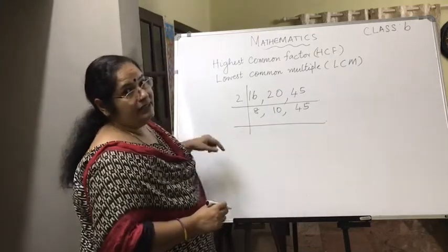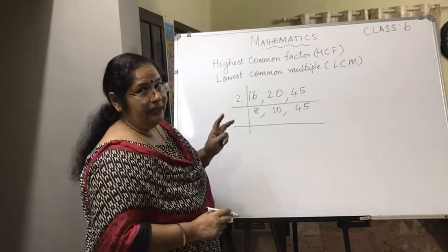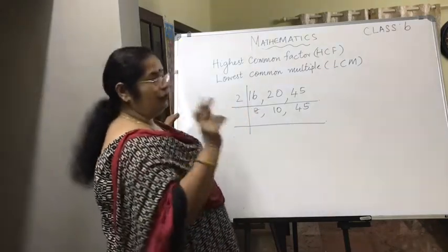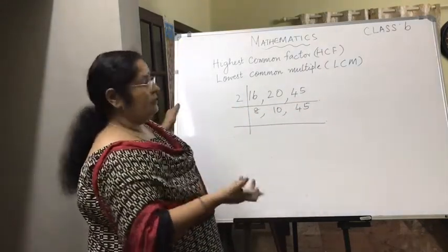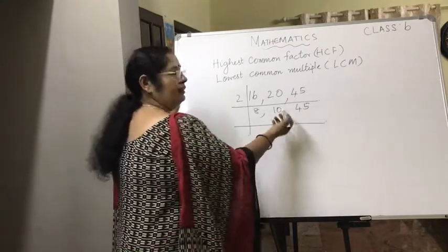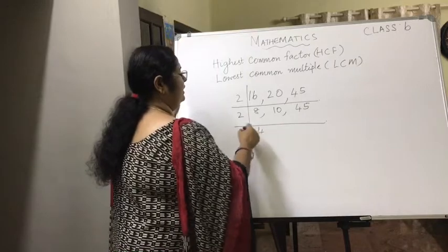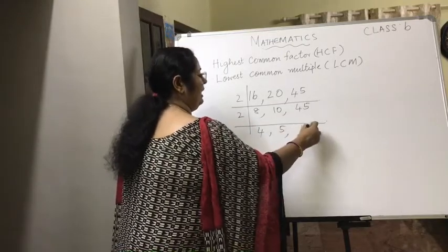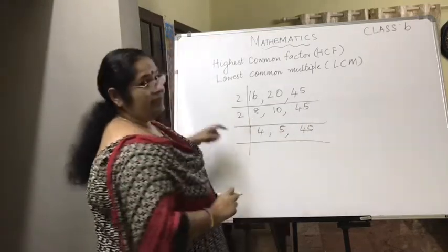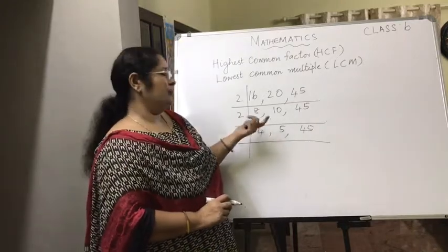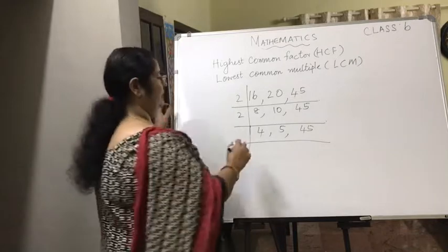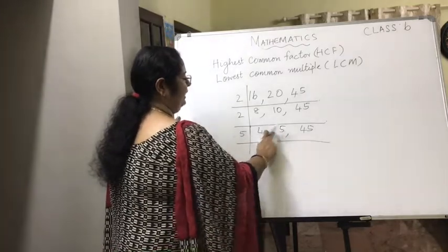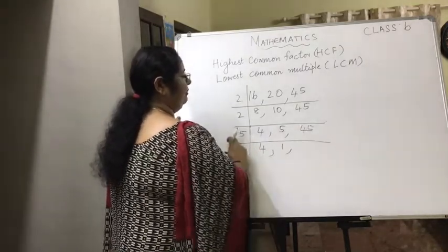In the next step, 8 and 10 are divisible by 2, and 10 and 45 are divisible by 5. We choose to divide by 2 again: 8 ÷ 2 = 4, 10 ÷ 2 = 5, and 45 is carried down. Then 5 and 45 are both divisible by 5, so we divide by 5: 4 is not divisible by 5 and is carried down, 5 ÷ 5 = 1, and 45 ÷ 5 = 9.